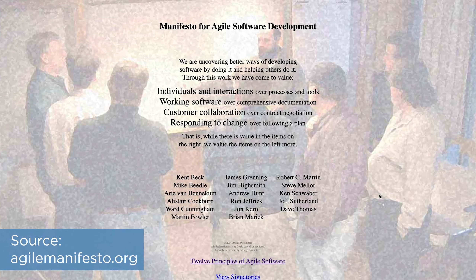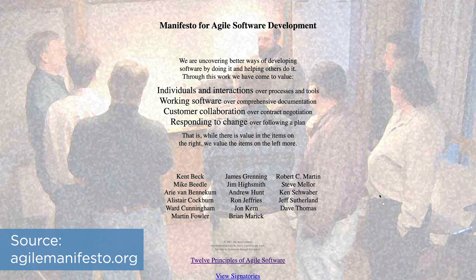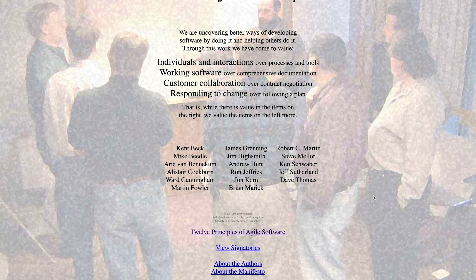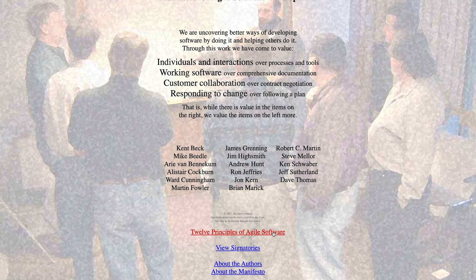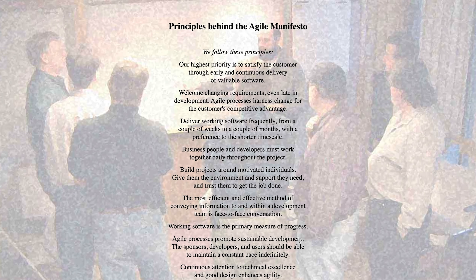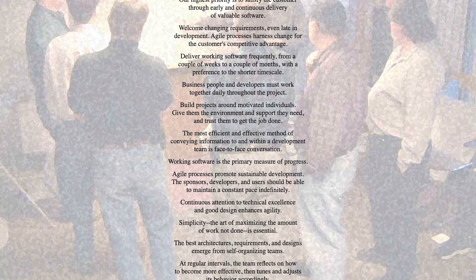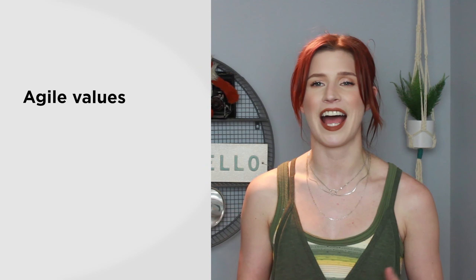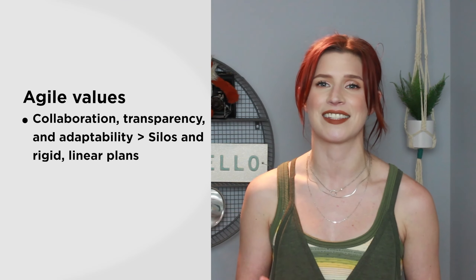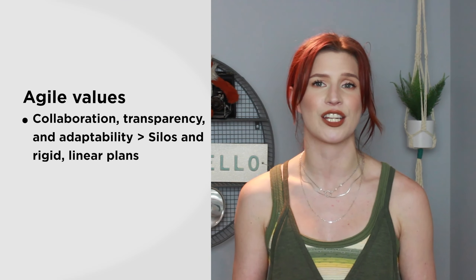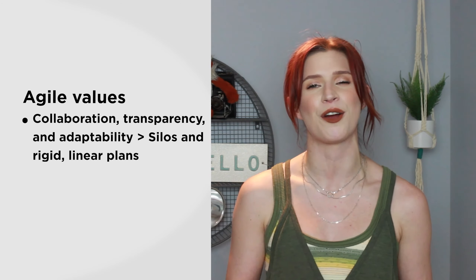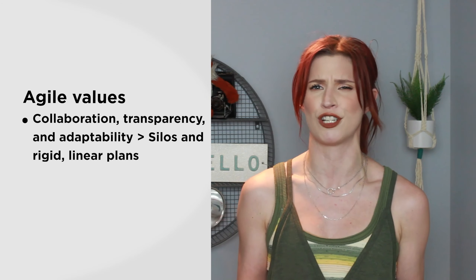Agile is based on the Agile Manifesto, a set of 12 principles written in 2001 by 17 authors. In general, agile emphasizes collaboration, transparency, and adaptability over silos and rigid linear plans.